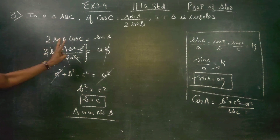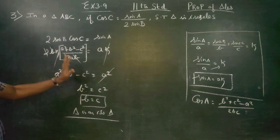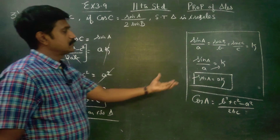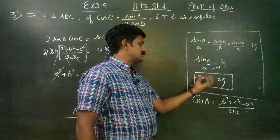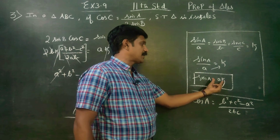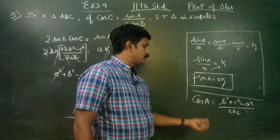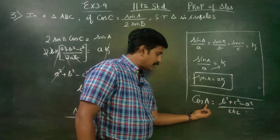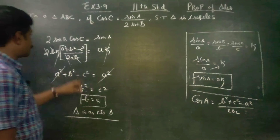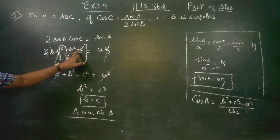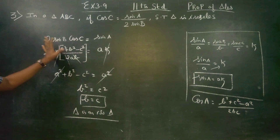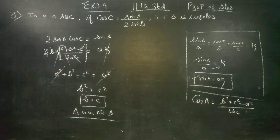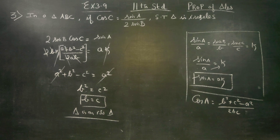Now, the two formulas you should know: sin A by A is equal to K, so sin A is equal to A·K. This is the law of sines formula. And cos C is equal to a squared plus b squared minus c squared by 2ab. This is the law of cosines formula. These are the sum of the two formulas used. It is very easy. Thank you.